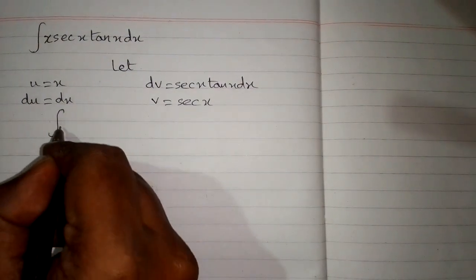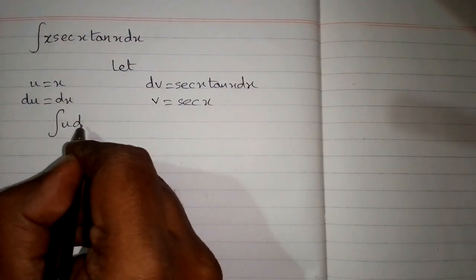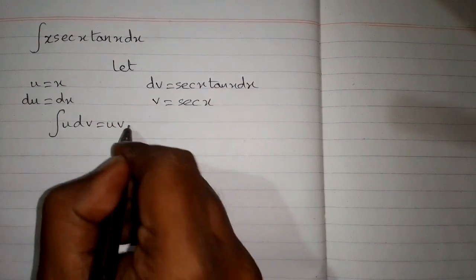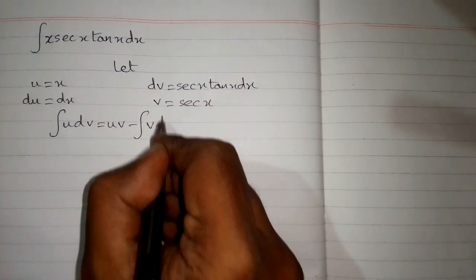Now we use integration by parts, which states that the integral of u dv equals uv minus the integral of v du.